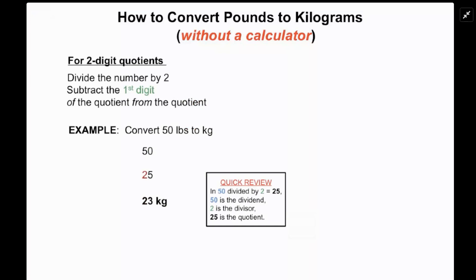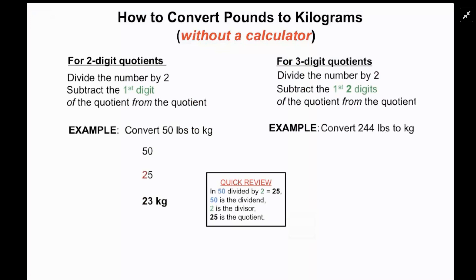For three-digit quotients, we divide the number in half again just like we did for the two-digit quotient, but we subtract the first two digits of the quotient from the quotient. For example, if we wanted to convert 244 pounds to kilograms without a calculator...